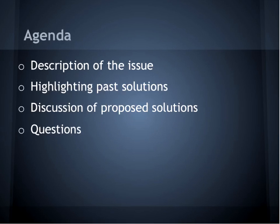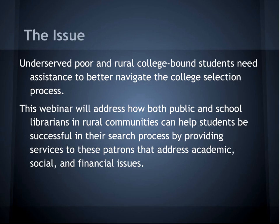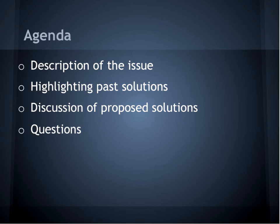Thank you, Elizabeth. So the subject of this webinar is that underserved poor and rural college-bound students have more difficulty than other new college students in navigating the college selection process. In this webinar, we hope to address how school libraries, public libraries, and academic libraries can help these rural students be successful in the search process by providing services that address academic, social, and financial issues. Our entire webinar is going to be divided into three parts. Elizabeth will start us out by giving some background on the specific difficulties that poor and rural students face when first attending college, and then I'm going to talk about what's already been done to address the issue.